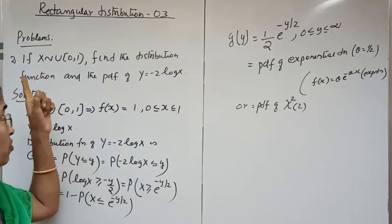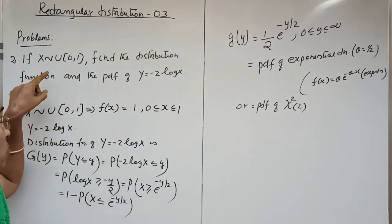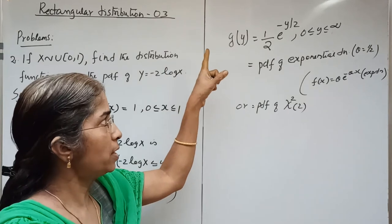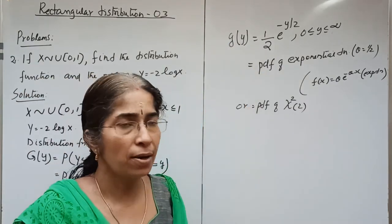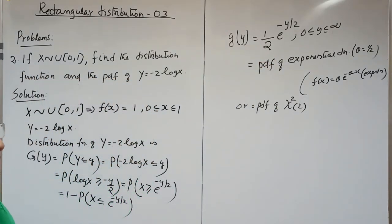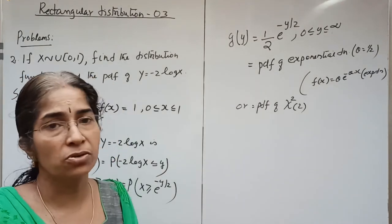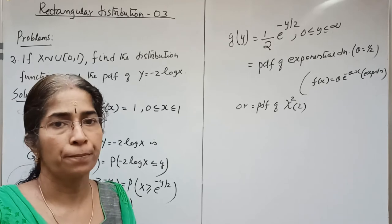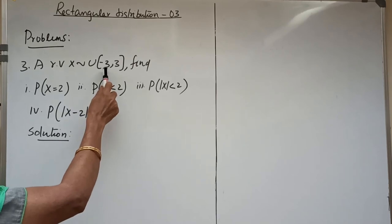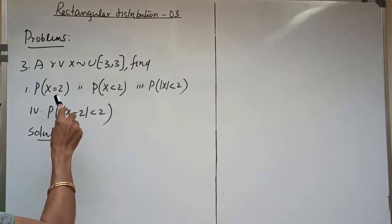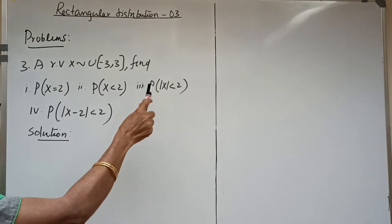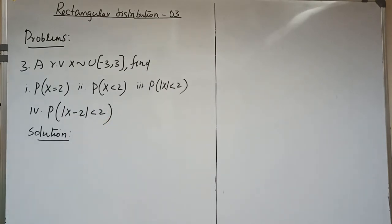This is a very important result: if X follows Uniform(0,1) and Y = -2 log X, the corresponding PDF is g(y) = (1/2)e^(-y/2), which is the exponential distribution with θ = 1/2, or it is the chi-square distribution with 2 degrees of freedom. The next question: a random variable X follows Uniform(-3, 3). Find P(X = 2), P(X < 2), P(|X| < 2), and P(|X - 2| < 2).